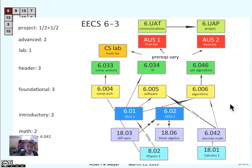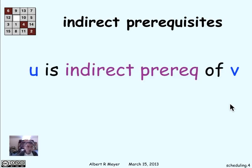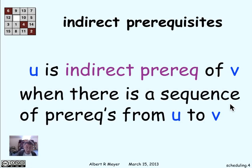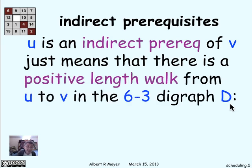It's simply a bunch of vertices — the course labels in rectangular boxes — and directed arrows showing catalog listings. When you're planning your coursework, you're really interested in the indirect prerequisites. One class U is an indirect prerequisite of another class V means there's a sequence of prerequisites starting from U and going to V — meaning you really have to have taken U some time before you took V. In graph digraph language, U is an indirect prerequisite of V means there's a positive length walk from U to V in the digraph — in this case the 6-3 digraph of prerequisites.